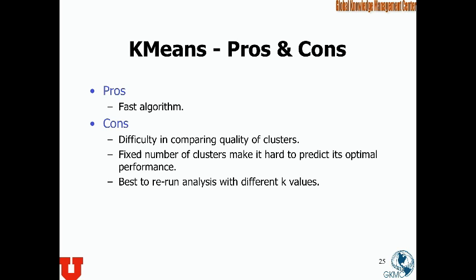Pros and cons of K-means: it is a fast process, sometimes going through 20 to 30 iterations, sometimes fewer than 10. But like all clustering outcomes, it's hard to evaluate the results, and the fixed number of clusters means you have to tweak K and do empirical work. There are algorithms to help select the number of clusters, but the choice tends to be driven by managerial considerations or by whether the distributions of customers in different clusters look meaningful.